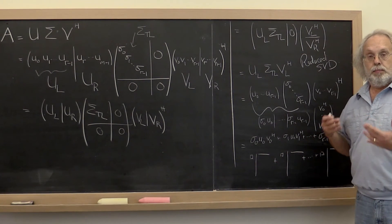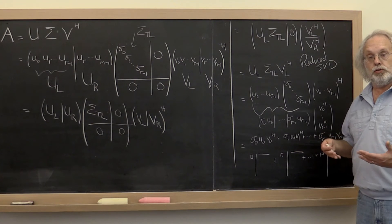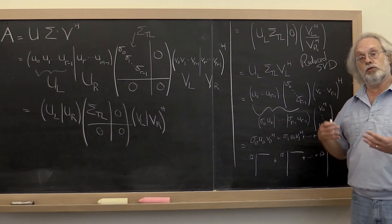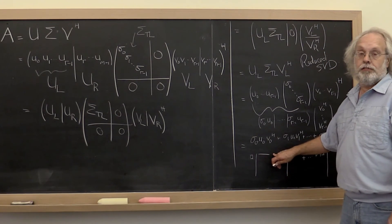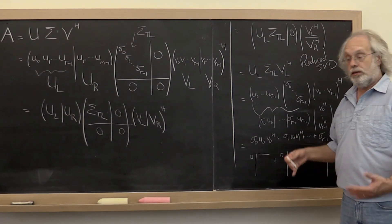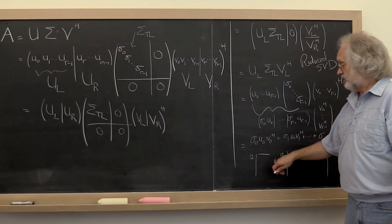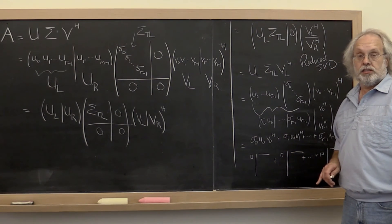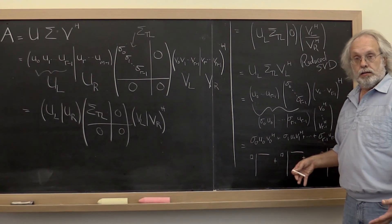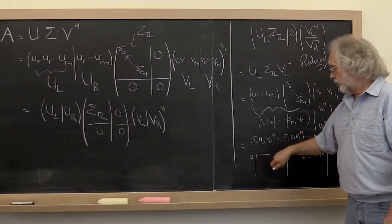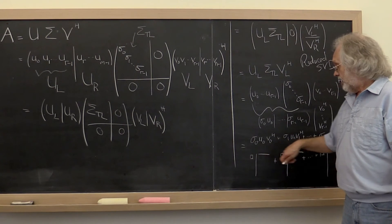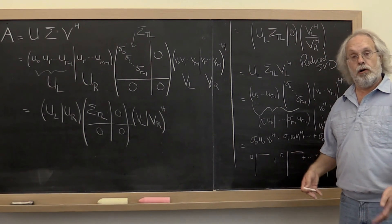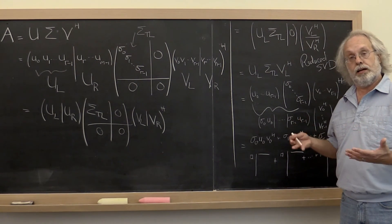Remember that an outer product has a rank at most one. Here we know that the vectors involved are of length one, so definitely each of these outer products is of rank one. And if you scale those by non-zero scalars, then you end up with terms that each are of rank one.